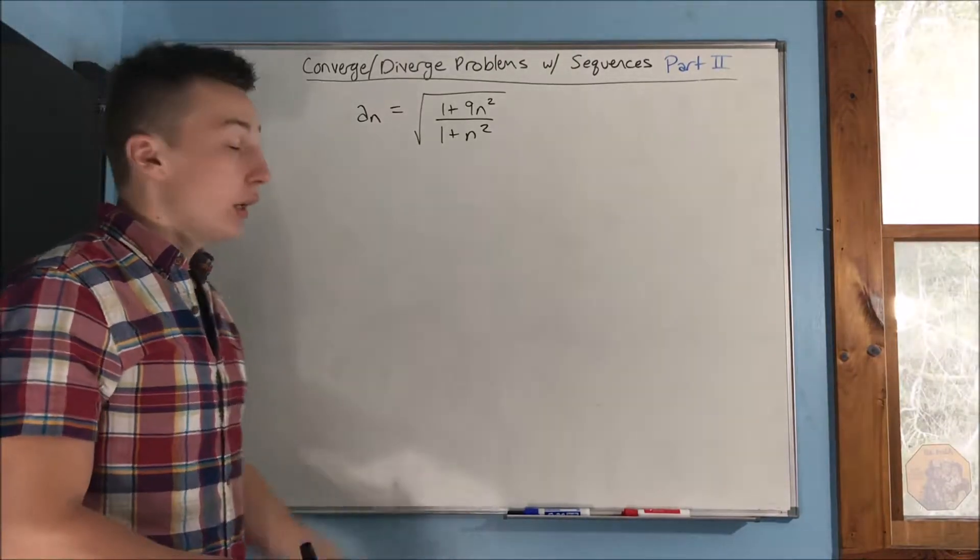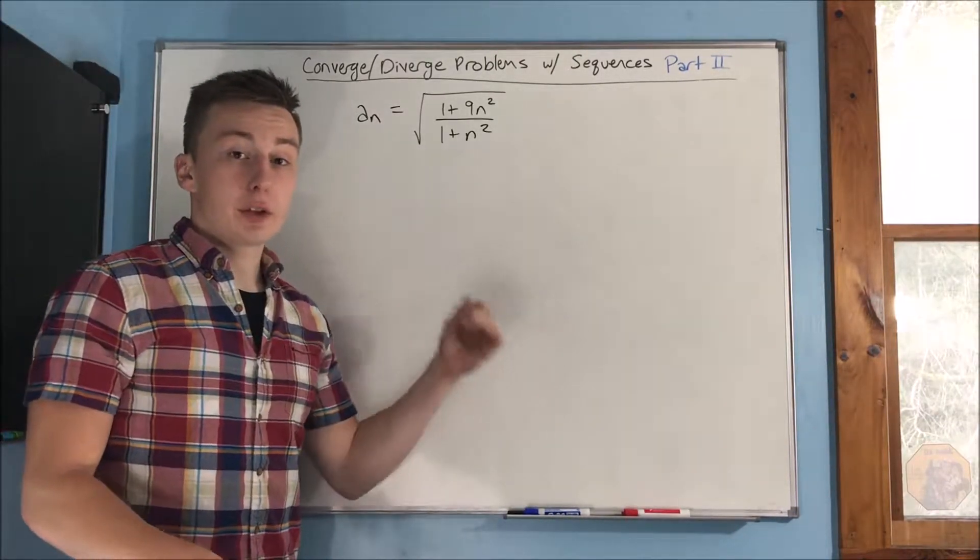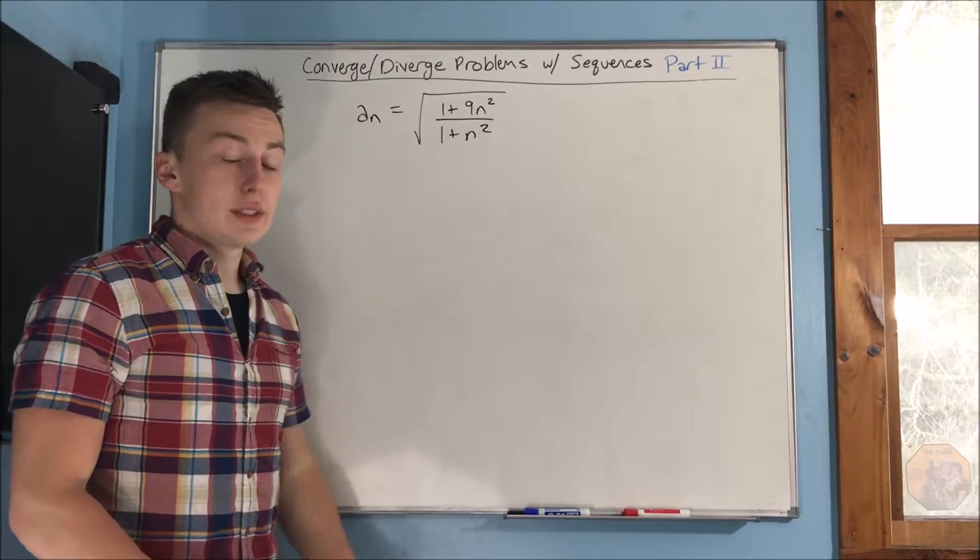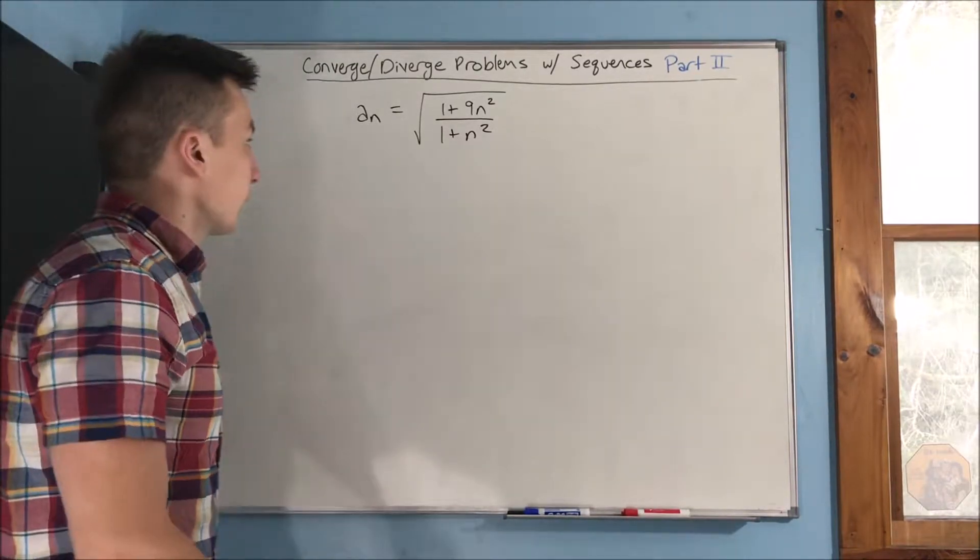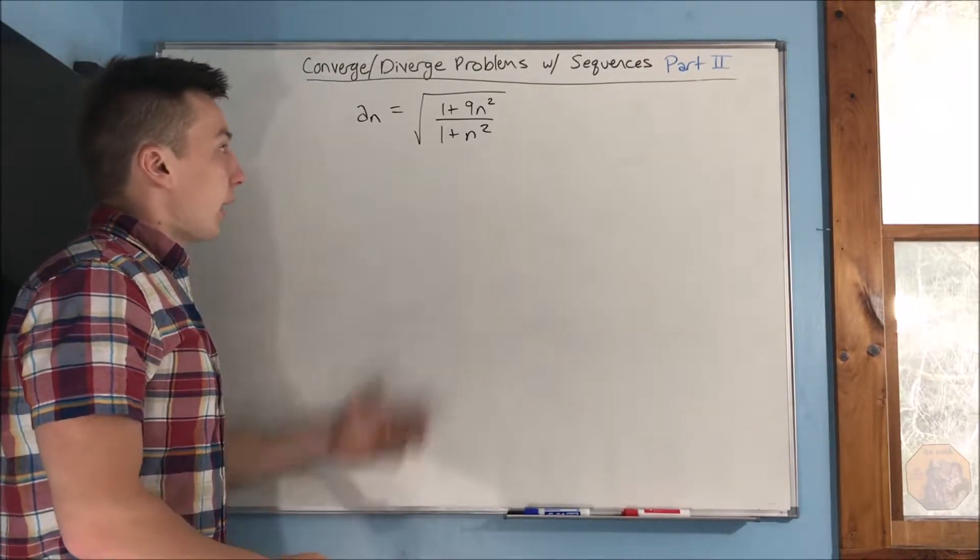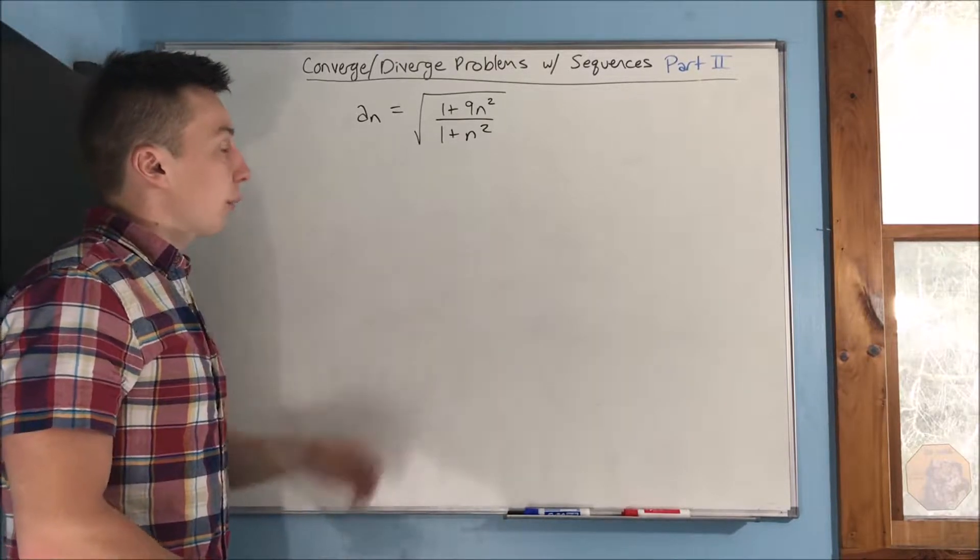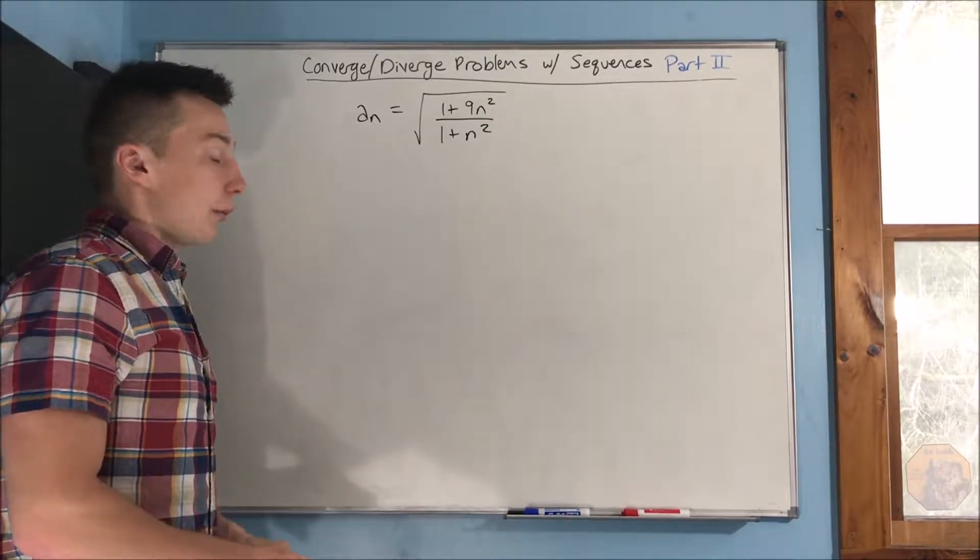Alright, so this is going to be part 2 of our converge-diverge problems with sequences. So we have our first sequence on the board here. We have a sub n equals the square root of 1 plus 9n squared over 1 plus n squared.